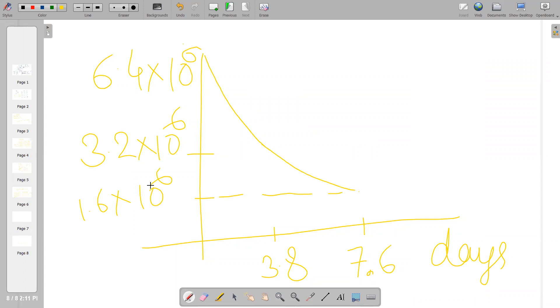Okay, so these many nuclei of radon are remaining. So how many underwent decay? That is 6.4×10^6 minus 1.6×10^6.